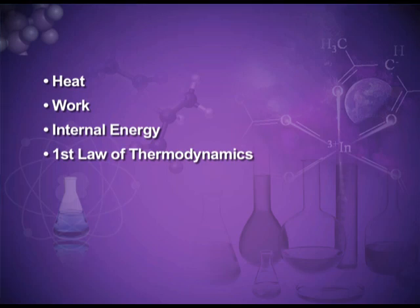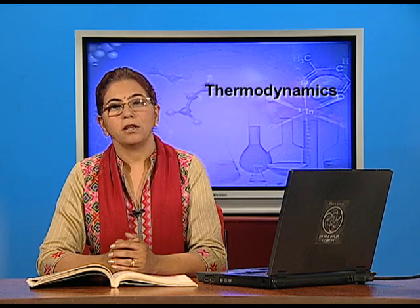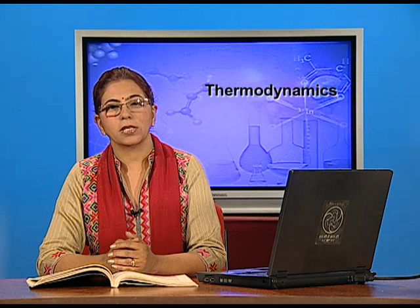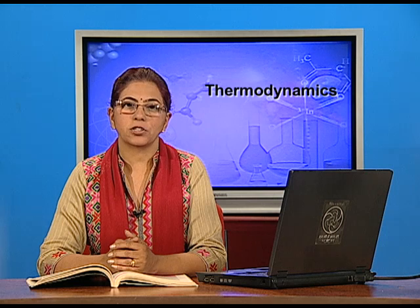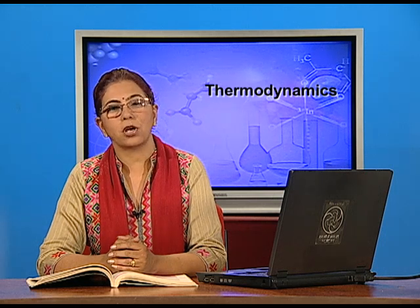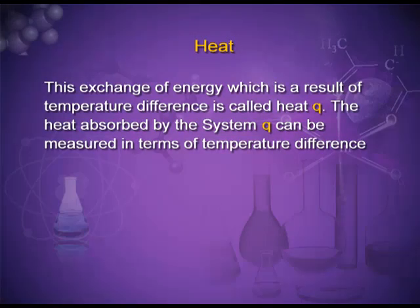Heat: When the system and surroundings are at different temperatures, exchange of energy takes place in the form of transfer of heat. If a system is at higher temperature, it loses heat to the surroundings, or vice versa. This exchange of energy, which is a result of temperature difference, is called heat. Its symbol is small q. The heat absorbed by the system q can be measured in terms of temperature difference.